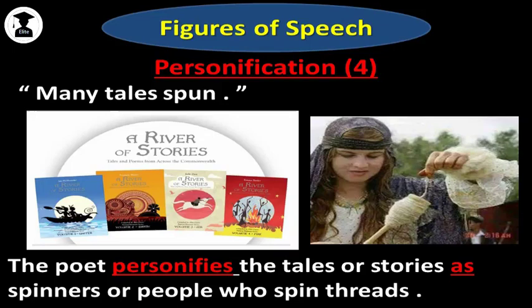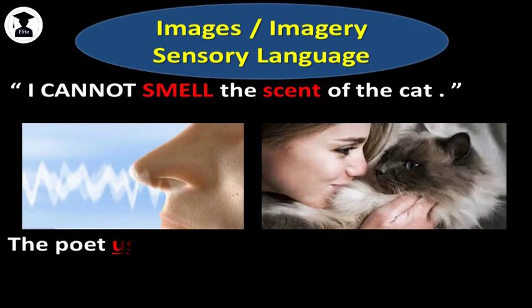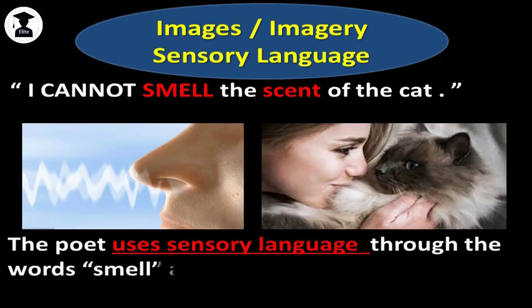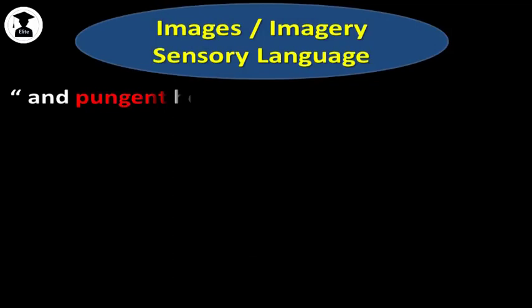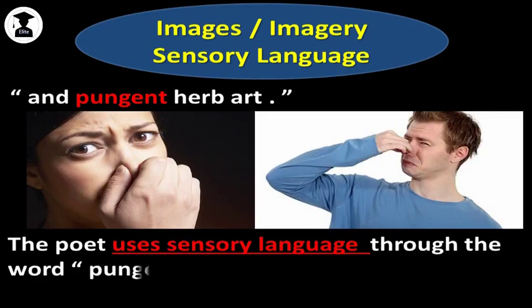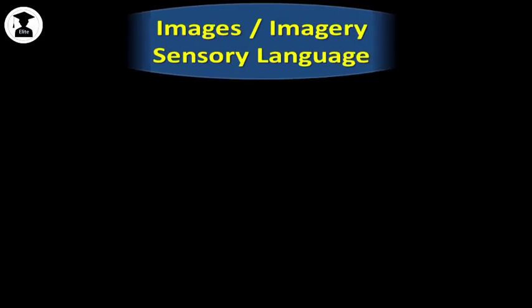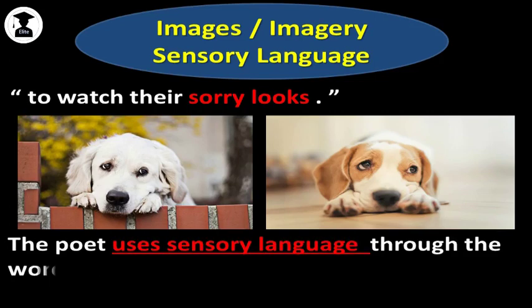Now let's have a look at the images, imagery or sensory language used in this poem by Linda Hogan. In the line 'I cannot smell the scent of the cat,' scent means smell also. Here the poet uses sensory language through the words smell and scent that appeal to the sense of smell. The second image is found in the line 'and pungent herb art.' The word pungent means having very bad smell. So the poet here uses sensory language through the word pungent that appeals to the sense of smell. The next image is found in the line 'to watch their sorry looks.' The poet uses sensory language through the words looks or sorry looks that appeal to the sense of sight.